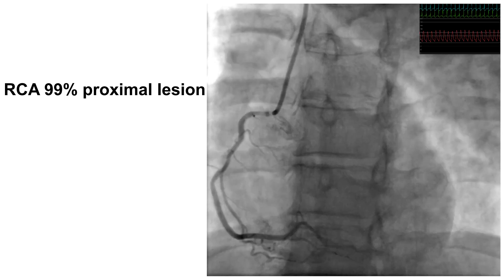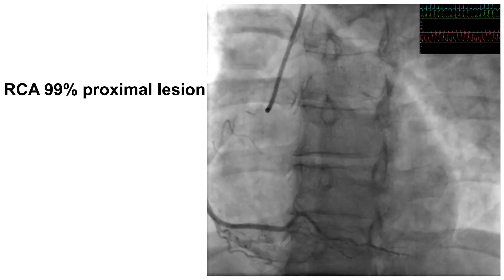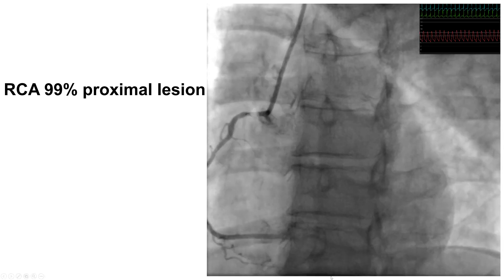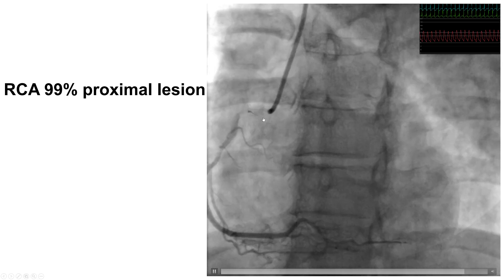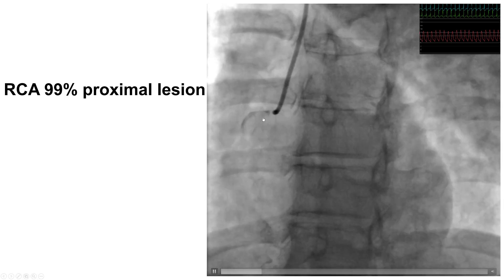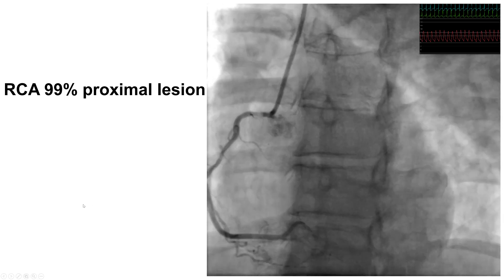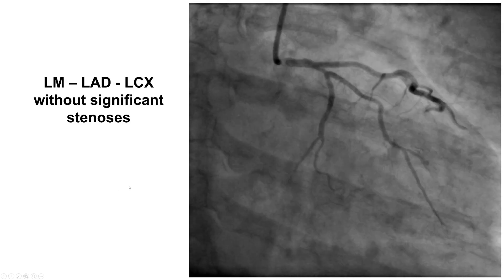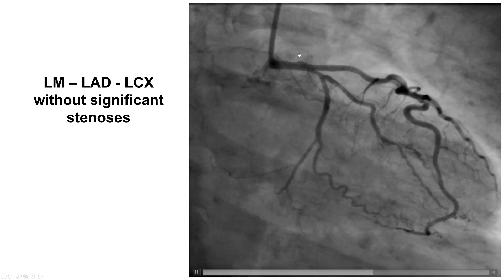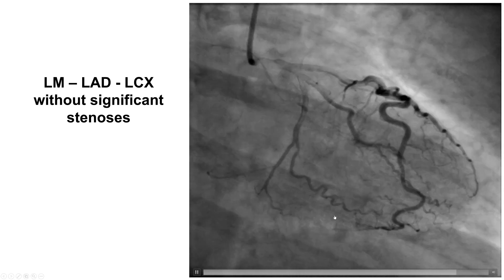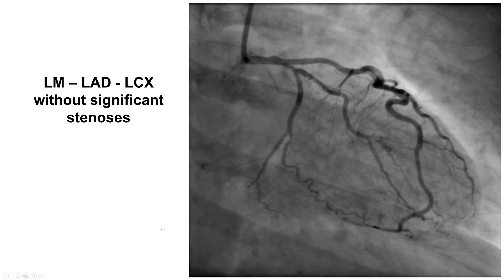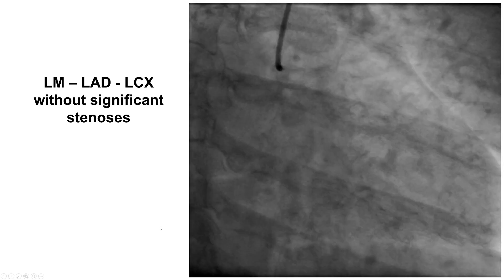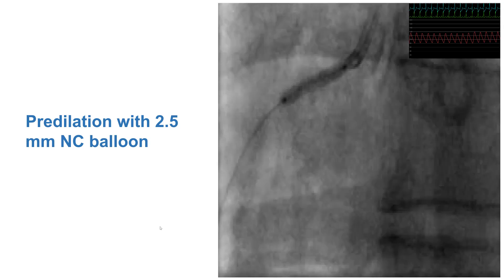Diagnostic coronary angiography confirmed the findings of the CT. There was a significant ostial lesion in the proximal right coronary artery. Interestingly, there wasn't significant stenosis on the left coronary system. Therefore, having single vessel disease, the plan was to perform PCI.